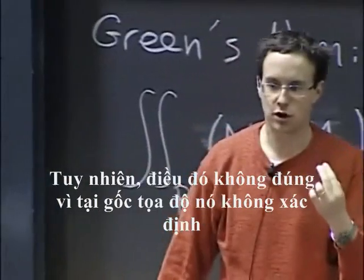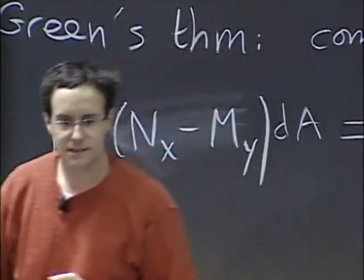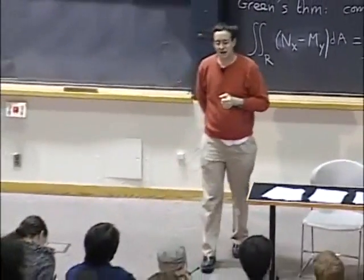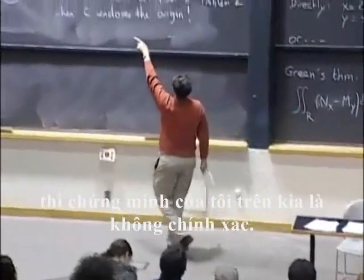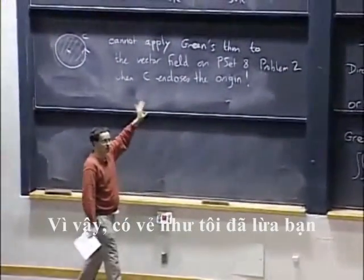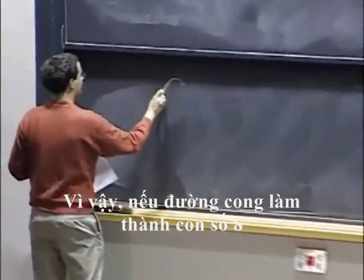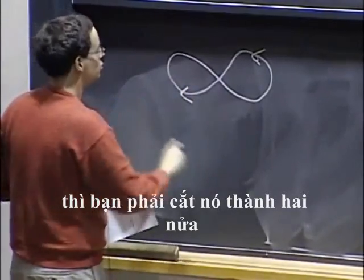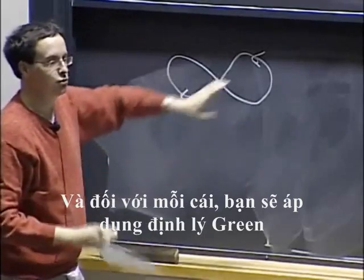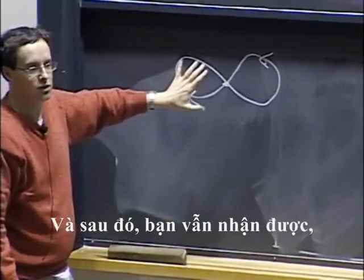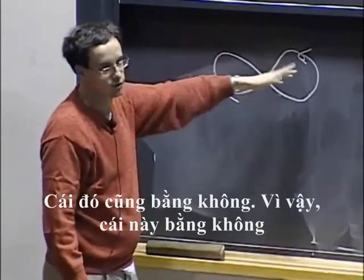But that doesn't work because at the origin it's not defined. If you take a curve that makes a figure eight, then indeed my proof over there is false. I kind of tricked you — it's not actually correct. If the curve does a figure eight, then what you would do is actually cut it into its two halves. For each of them you would apply Green's theorem. And then you would still get that if the curve is zero, then this line integral is zero. That one is also zero, so the sum is zero.